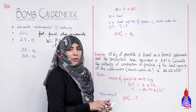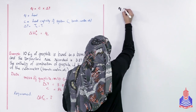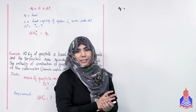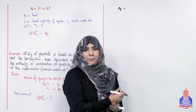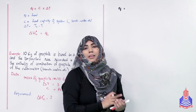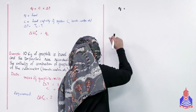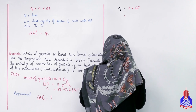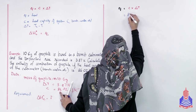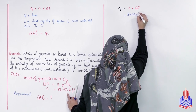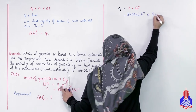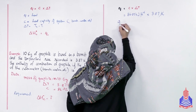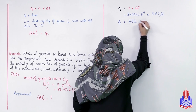Delta T की भी value है और C की value भी है। Heat combustion के दौरान steel bomb से water में transfer हुई - overall bomb calorimeter का temperature change था। Q = C × ΔT: values put करते हैं - C = 86.02 kilojoule per Kelvin, ΔT = 3.87 Kelvin। Kelvin cancel out होगा, तो Q की value आएगी: that is 332.89 kilojoule।